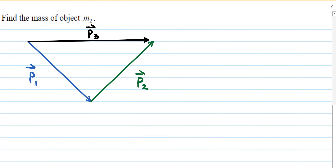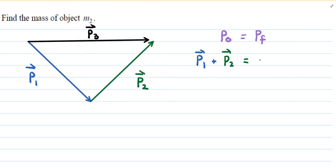The concept here is conservation of momentum — the momentum at the beginning equals the momentum at the very end. Since we're dealing with vectors, we have the first momentum vector P1 plus the second momentum vector P2 equal to the third momentum vector P3, which is the resultant. We're adding vectors from head to tail, connecting the idea of momentum being conserved.